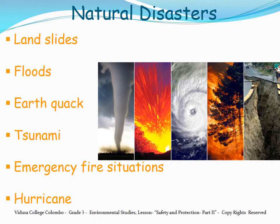What is a natural disaster? A natural disaster is an event such as landslides, flood, earthquake, tsunami, emergency fire situation, or hurricane that causes great damage or loss in lives.